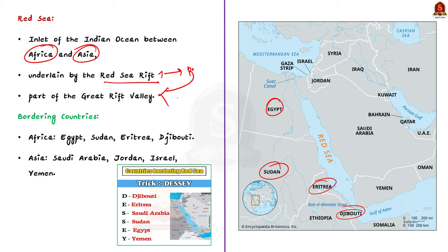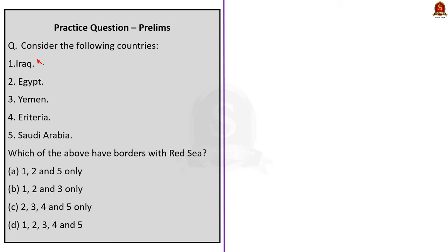On the Asian side: Saudi Arabia has a long coastline along the Red Sea leading to the Gulf of Aqaba; Jordan has a small coastline at the northern end of the Gulf of Aqaba; and Israel's resort city of Eilat is also on the Red Sea at the northern tip of the Gulf of Aqaba. At the southern end, Yemen has a significant coastline including the strategic Bab-el-Mandeb Strait. So other than the first option, Egypt, Yemen, Eritrea and Saudi Arabia all share borders with the Red Sea, making the correct option C.